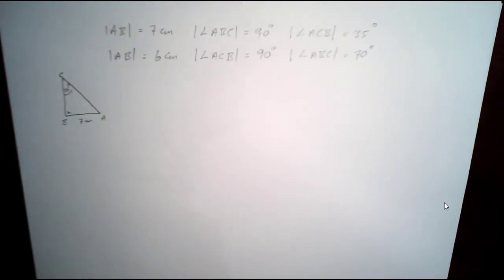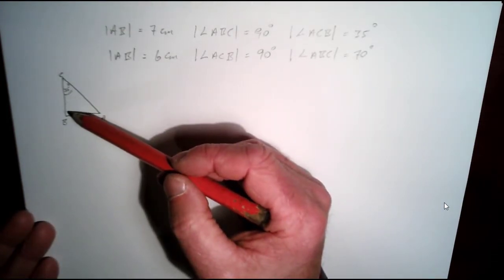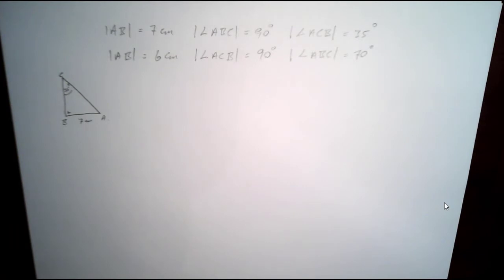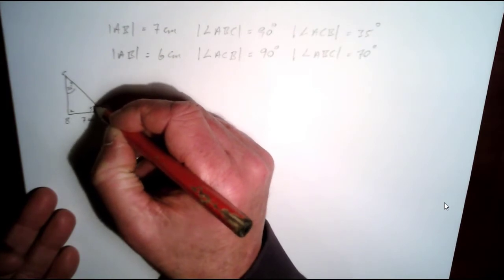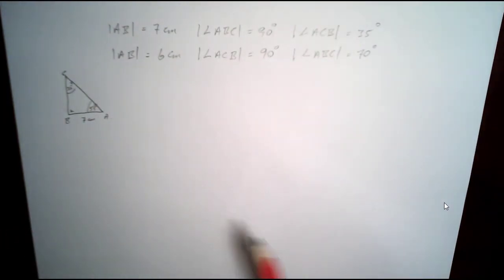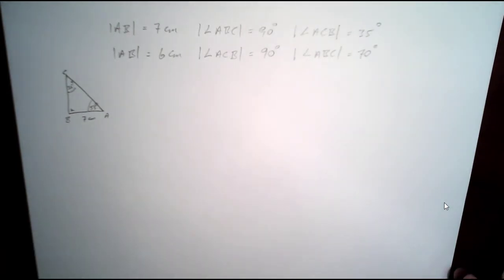Now if you take this here as being 35 degrees, if you add that to 90, you get 125 degrees. Subtract 125 degrees from 180 and you get 55 degrees here. So we have all three angles really, we have 35 degrees, 55 and 90 degrees here.